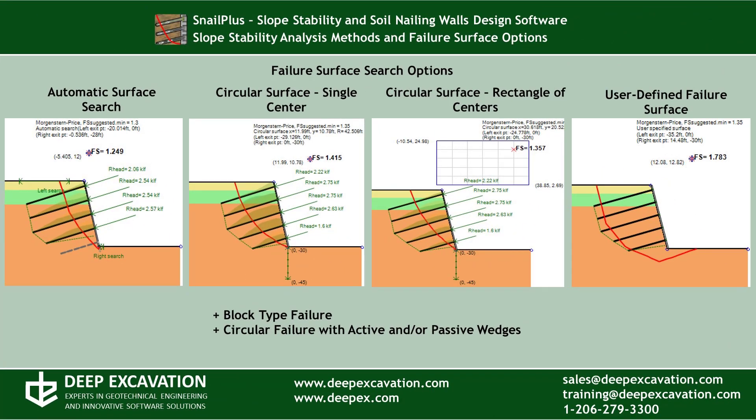In Snell Plus software we have implemented several different failure surface search options, like the automatic surface search, circular surfaces with or without active and passive wedges, user-defined failure surfaces, and block type failures.